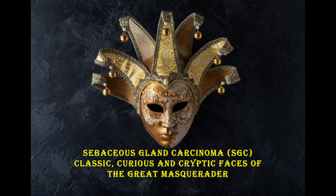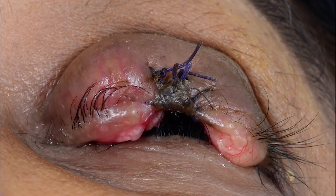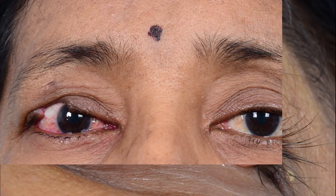Sebaceous gland carcinoma (SGC) is the most common eyelid malignancy of the eastern world, with an incidence of 1.07 per million, constituting more than half of the eyelid tumours presenting to the oculoplastic surgeon. This is almost twice the incidence of SGC seen in the west. It is misdiagnosed in up to 50 percent of cases.